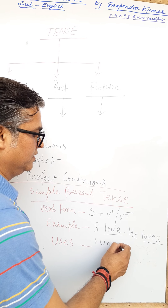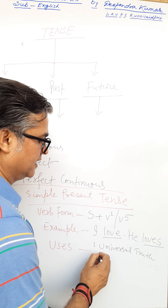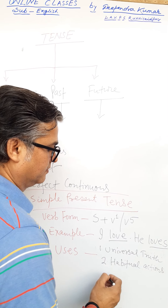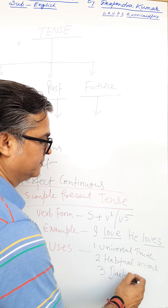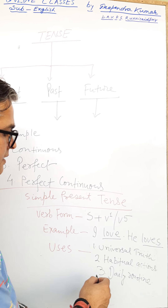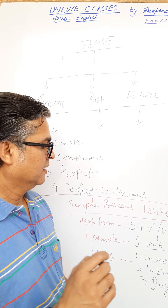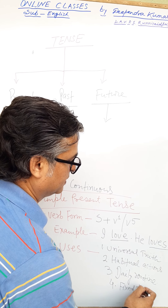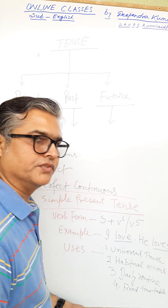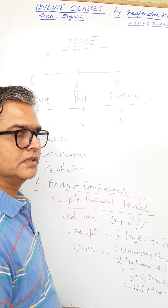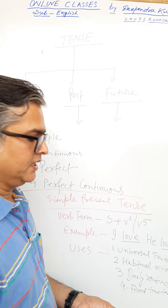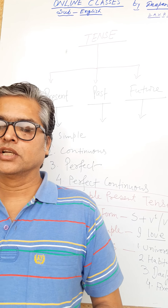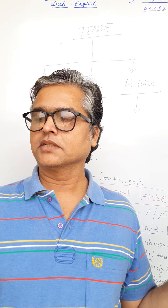The major uses of simple present tense are: first, universal truth; second, habitual actions; third, daily routine. There are many more uses — sometimes fixed timetable about the future is also written in this form, quotations of famous people, running commentary, and many other things.